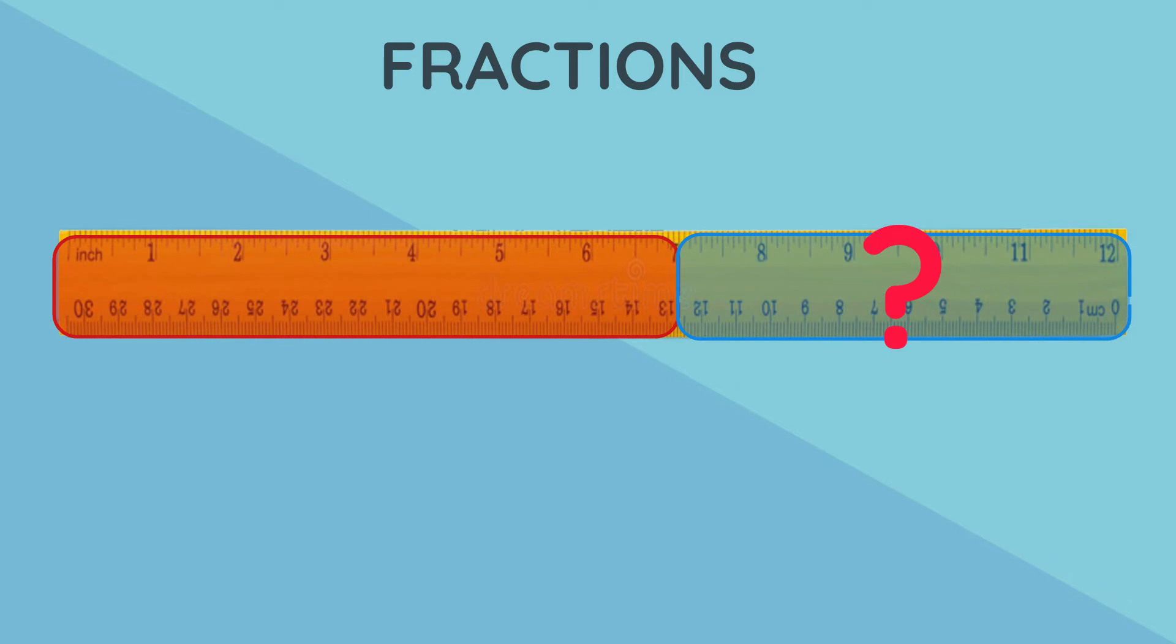Well, there is a total of 12 parts and five are blue. That means five parts out of the total 12, or five twelfths of the ruler is blue. Great job.